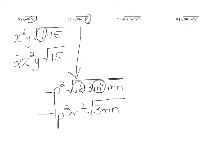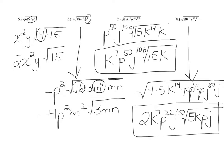Go ahead and stop the video and try the next two. For number 7, I ended up with k to the 7th, p to the 50th, j to the 106th all on the outside, and 15k left on the inside. It doesn't matter what order the variables go in, but it does matter that your exponent goes with the right variable. For number 8, there were no perfect squares at all inside, so I started by breaking everything up. I pulled out the square root of 4, the square root of k to the 14th, the square root of p to the 44th, and the square root of j to the 80th. What was left on the inside is 5k, p, and j.